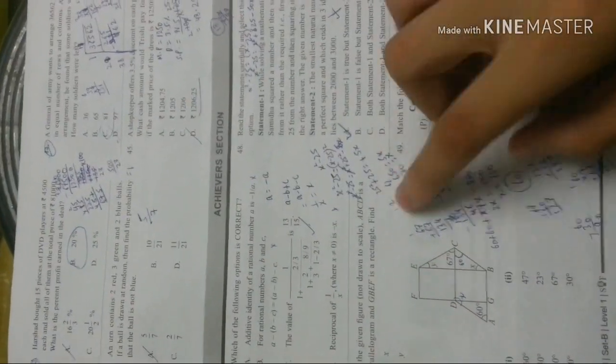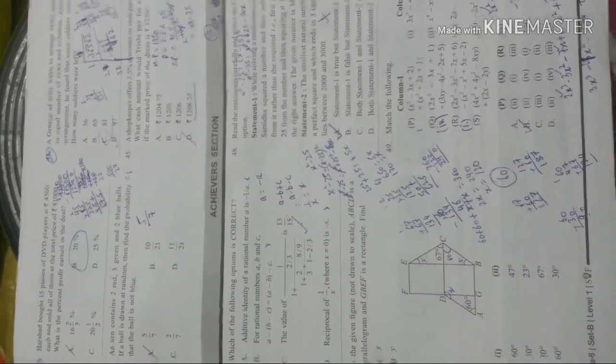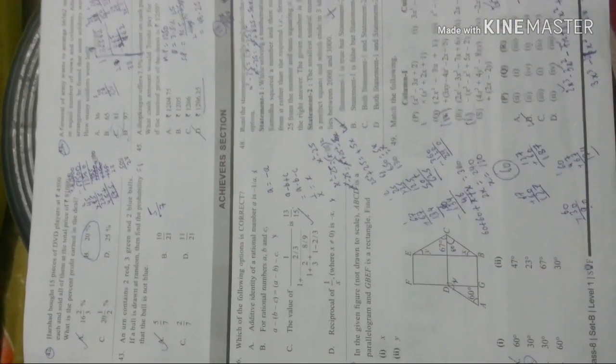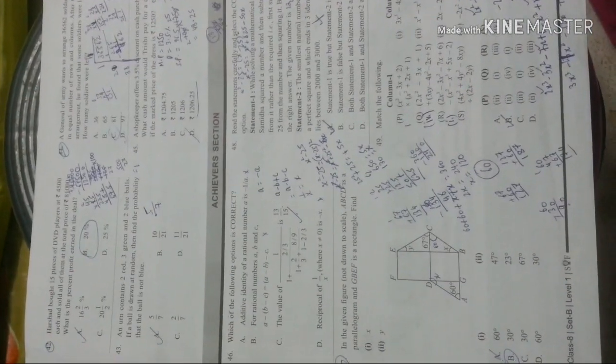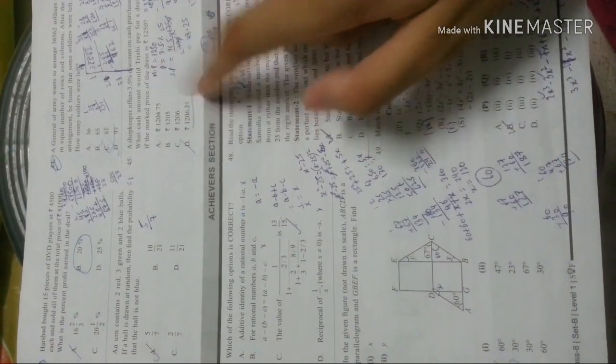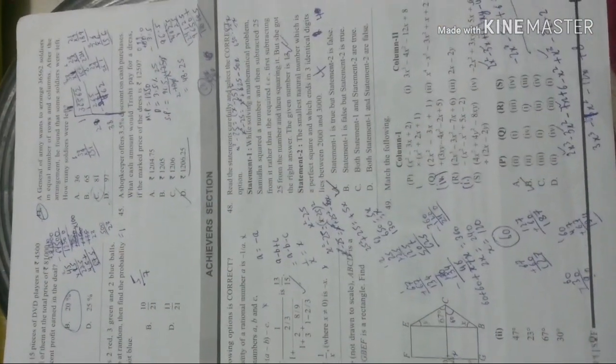After that, Achiever section. This part has 5 questions. These are of 5 marks and not the everyday Mathematics questions. They are not of 5 marks, they are 1 mark each. All of the questions except the Achiever section are of 1 mark each.